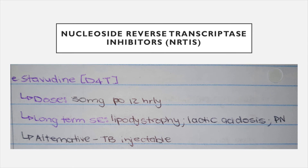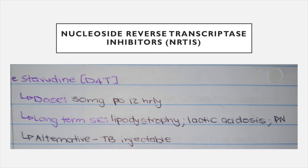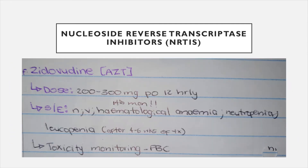Stavudine (d4T) is dosed at 30 milligrams orally 12-hourly. If used long-term, side effects include lipodystrophy — an abnormal distribution of fat in your body — as well as lactic acidosis and peripheral neuropathy. An alternative is that it can be kept as an injectable instead of oral.